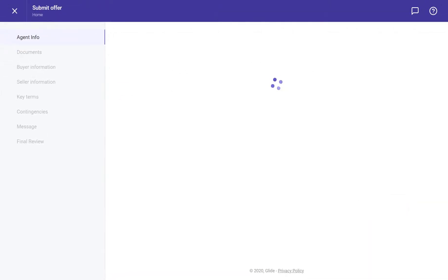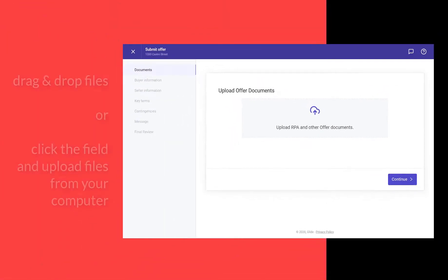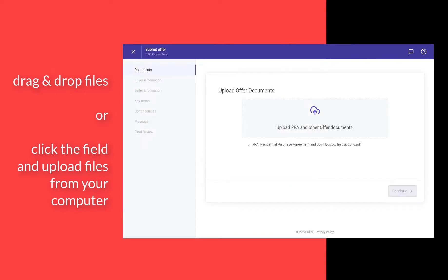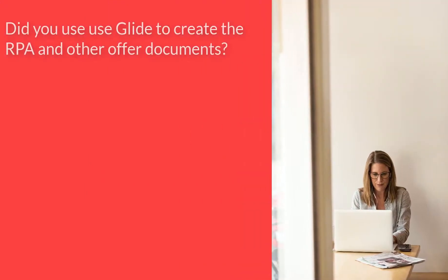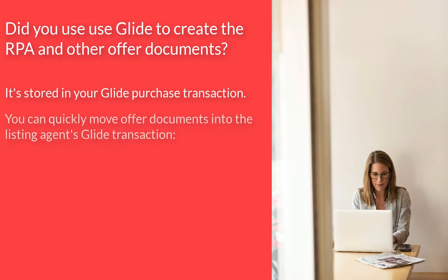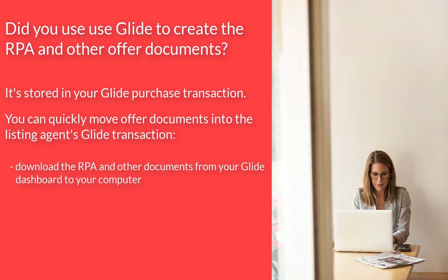Next, upload the offer package. On this screen, you can drag and drop your completed RPA, pre-approval letter, and other supportive documents that apply here. If you already use Glide to complete the RPA form, it's stored within your Glide purchase transaction. Simply move the documents into the listing agent's Glide transaction by downloading the completed RPA and other documents from your purchase transaction's documents dashboard and uploading those PDFs into this portal.